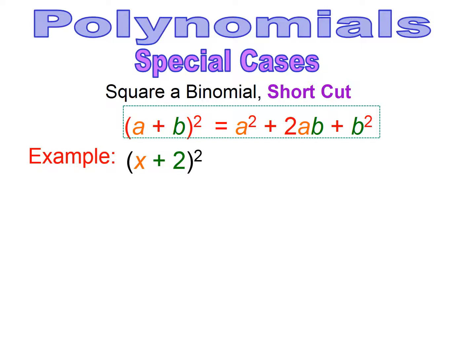Let's do an example: a squared binomial, x plus 2. I colored it so you understand what term is a and what term is b. The first term is x, so the first term in the shortcut is x squared. The middle term is x times b, which is 2, so x times 2, then doubled — 2 times x is 2x, times 2 gives 4x. And the last term is 2 squared, which is 4.